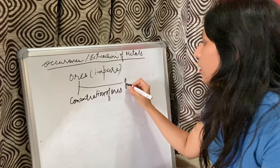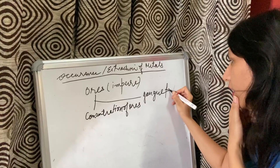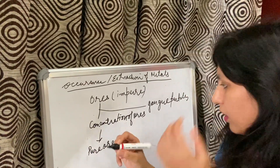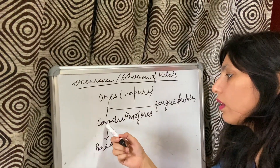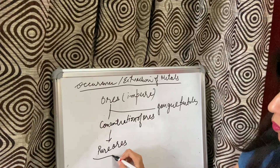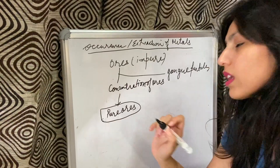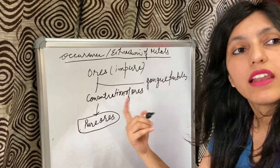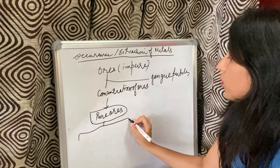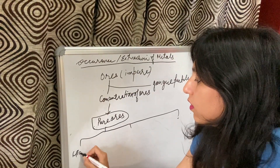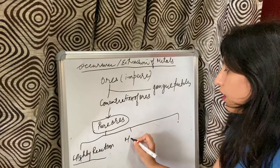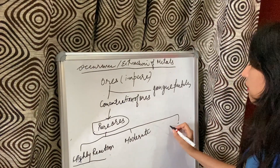We will go for concentration of ores — the removal of the gang particles. The gang particles from the ores will be removed and we will get the pure ores. After concentration, we need to extract the metals from the ores. Metals can be highly reactive, moderately reactive, or less reactive, and each has a different process.